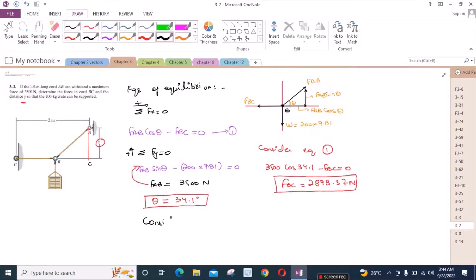So if we consider triangle ABC, this angle right here is 34.1 degrees. So I can use the ratio of sin theta to find this value Y. So sin 34.1 is equal to Y upon the hypotenuse. And hypotenuse is equal to 1.5 meters, which is given in the problem. Because AB, the hypotenuse, is 1.5 meters. So from here Y is equal to 0.841 meters.